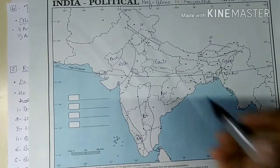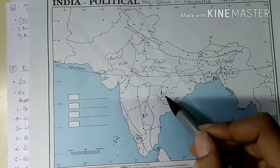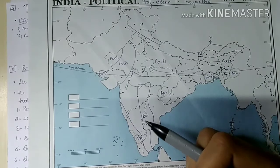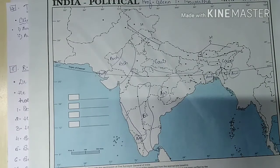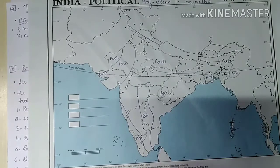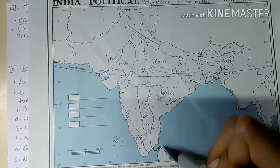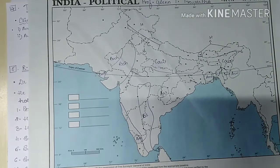AW is tropical wet-and-dry or savannah type, with temperature remaining at 27 degrees Celsius but annual rainfall of about 100 centimeters. All rainfall occurs in summer. The major part of the peninsular region and the northeastern state of Mizoram experience this type of climate.